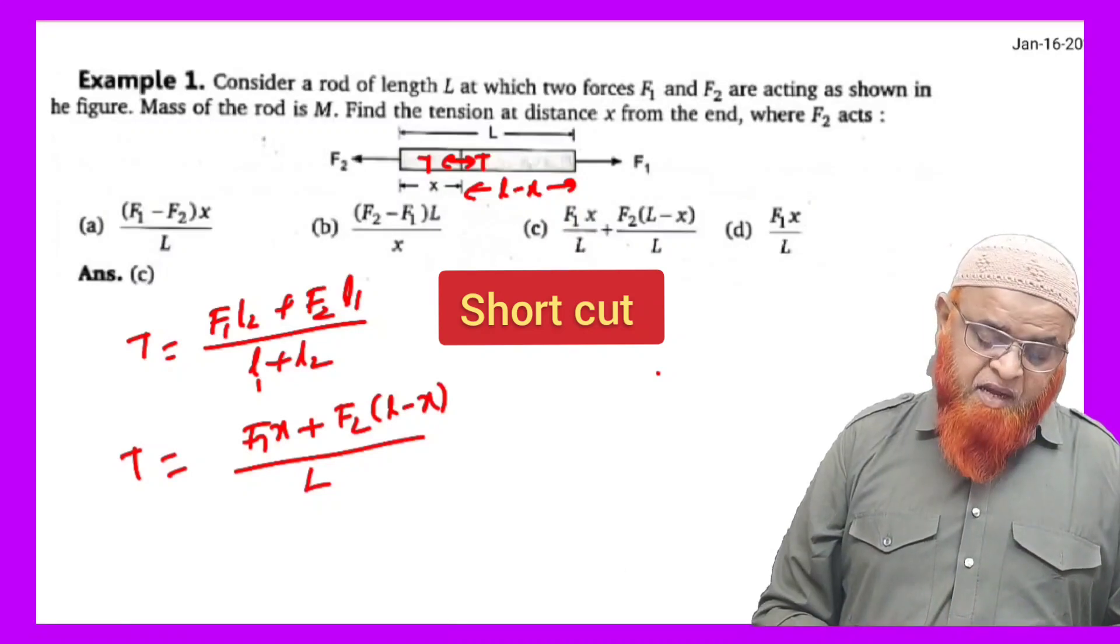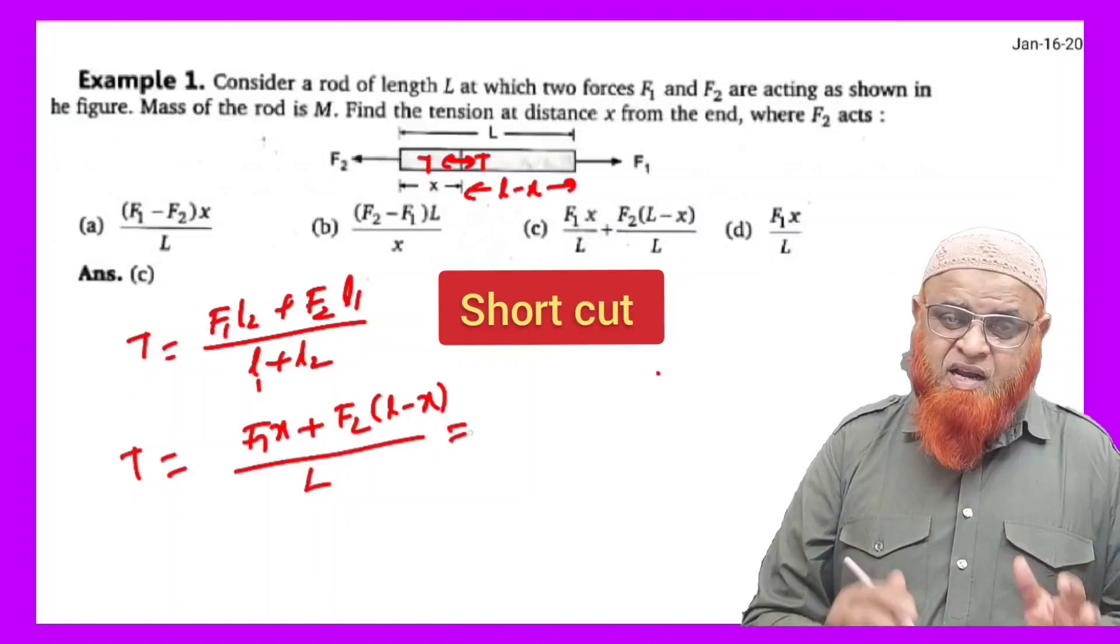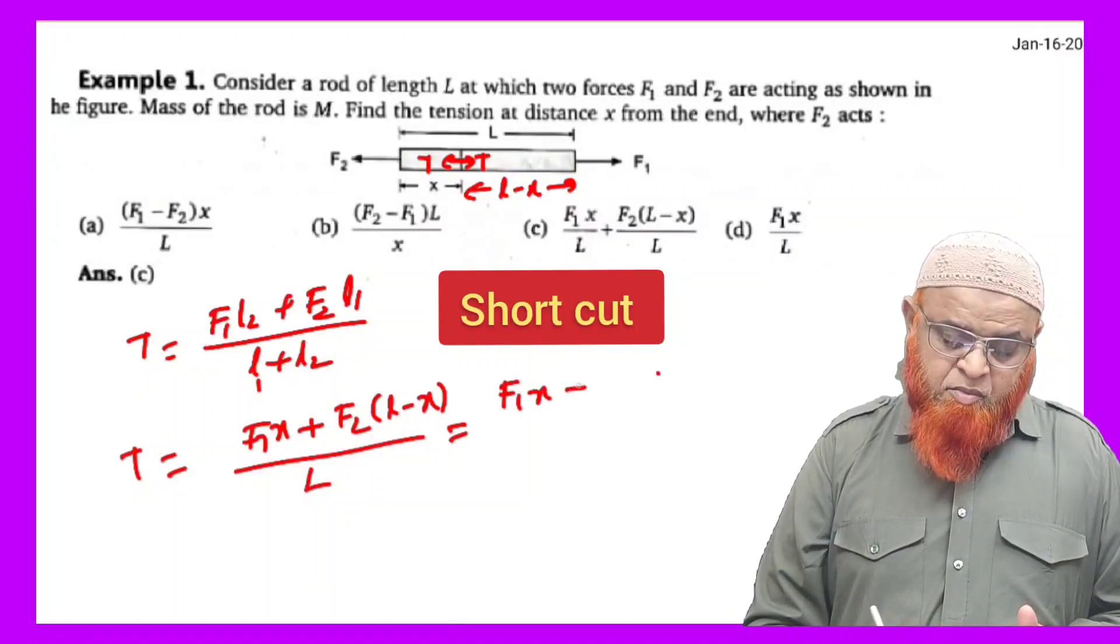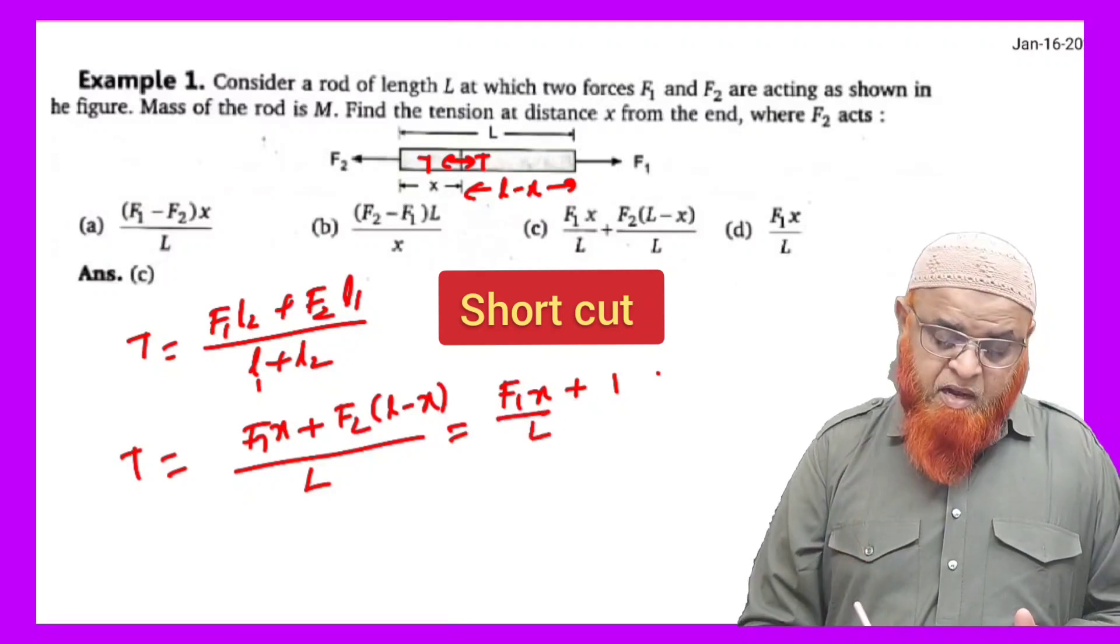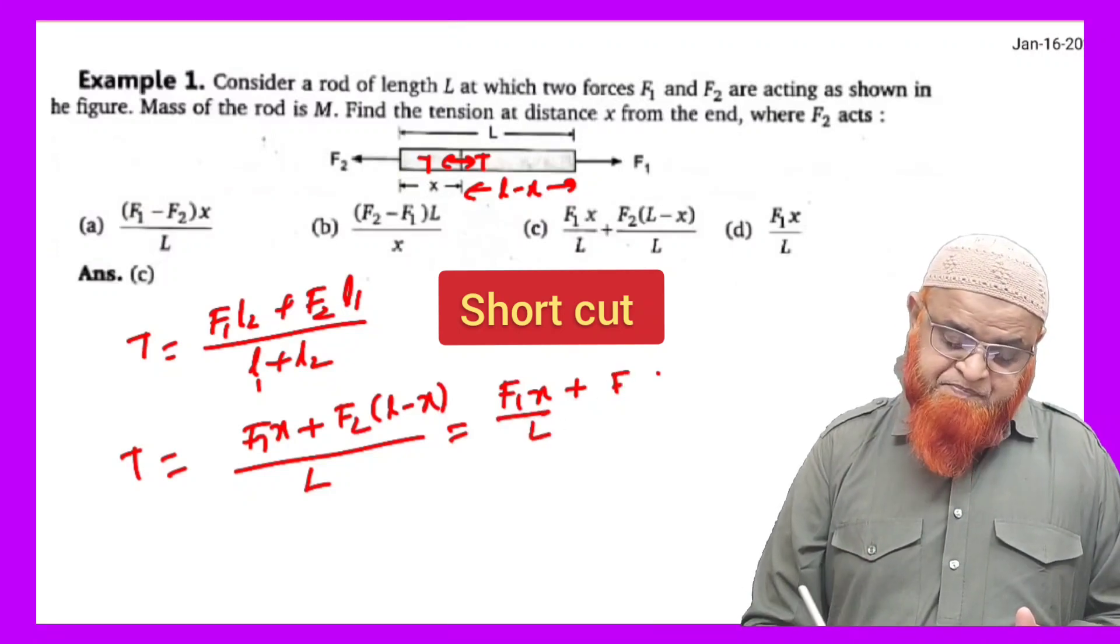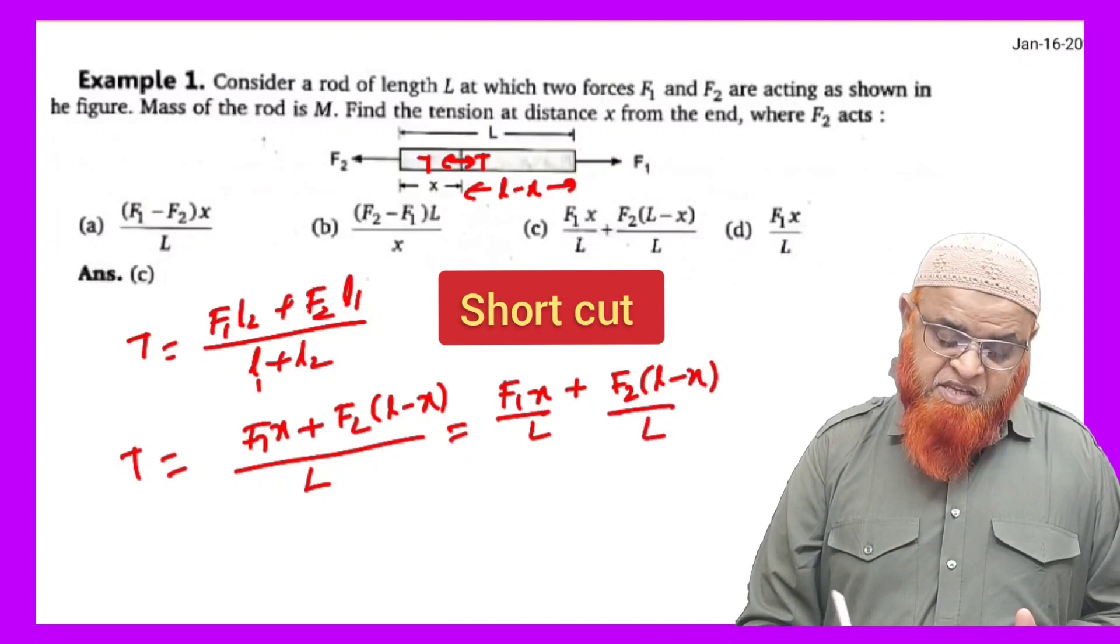The total length of the rod is taken as capital L here. So now you can just simplify and write the answer directly. That is, it is going to be F1 X plus F2 into L minus X divided by capital L.